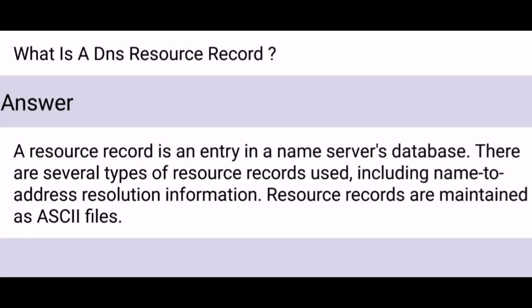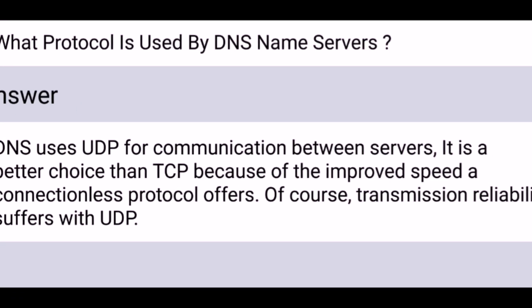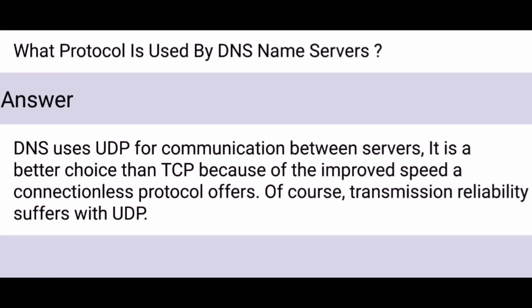What is a DNS resource record? A resource record is an entry in a name server's database. There are several types of resource records used, including name to address resolution information. Resource records are maintained as ASCII files.